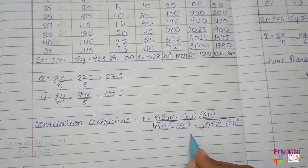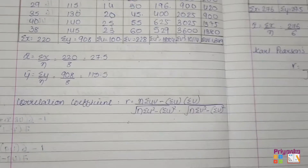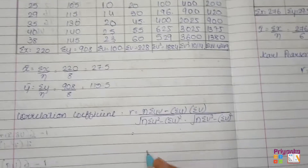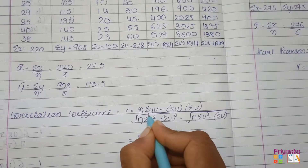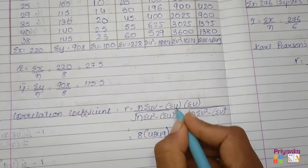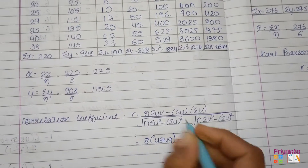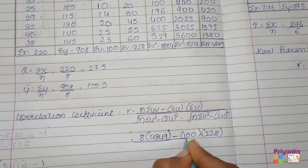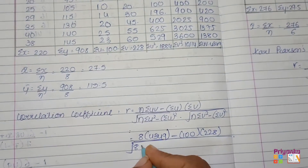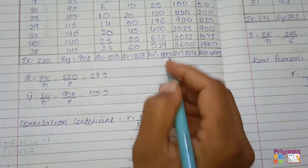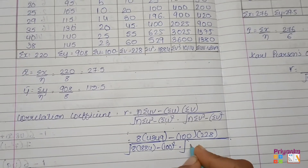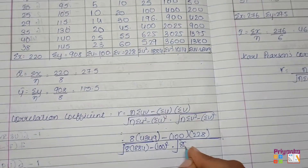After getting all the totals, let's put them into the Carl Pearson formula. Here n is 8 — count the number of observations: 1, 2, 3, 4, 5, 6, 7, 8. So n equals 8. Sigma UV is 4349, sigma U is 100, sigma V is 228. Under the root: n is 8, sigma U squared is 1884, minus sigma U squared, then sigma V squared.